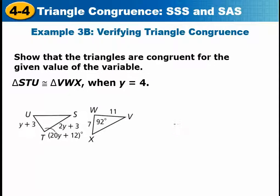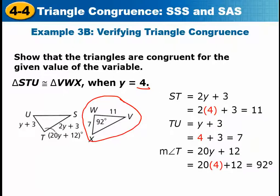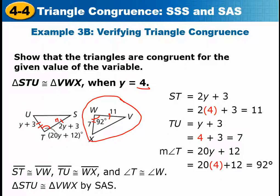Here's one where we're missing an angle as well, and y = 4. The completed triangle has 7 for one side, 11 for another side, and 92 degrees for an angle. Plugging four in to triangle STU: ST gives 11, TU gives 7, and the angle gives 92 degrees. So ST is congruent to its corresponding side, TU is congruent to its corresponding side, and the angles are congruent — by SAS, the two triangles are congruent.